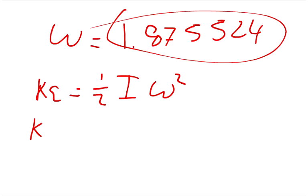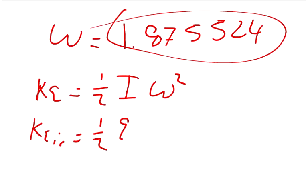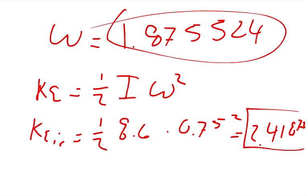So we say that the KE initial, this is rotational energy by the way, is equal to 1/2. And then I, we said was 8.6, so 8.6 times, and we said that the angular speed was 0.75, so we got to square that, 0.75 squared. And that equals 2.41875, our initial rotational kinetic energy.